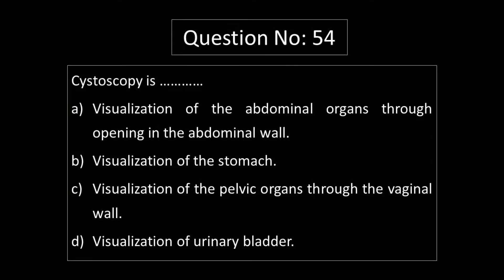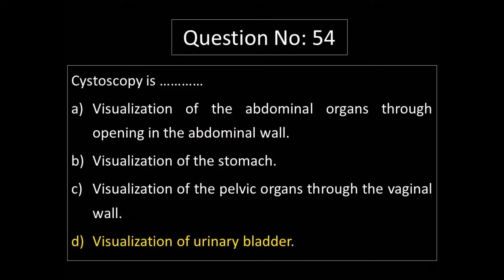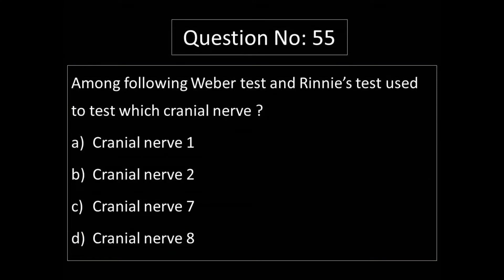Visualization of abdominal organs through opening in the abdominal wall is laparoscopy. Visualization of stomach is also laparoscopy. Visualization of pelvic organs through vaginal wall is also laparoscopy. Cystoscopy is the visualization of the urinary bladder. The answer is Option D.